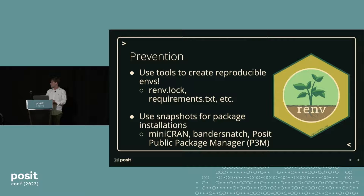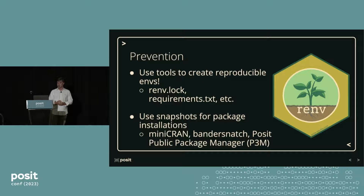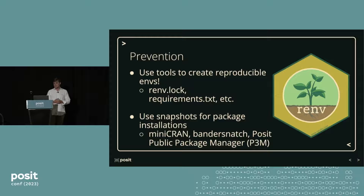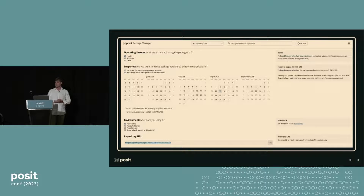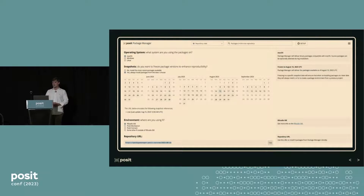We should use tools to create reproducible environments. We have renv.lock, we have requirements.txt in Python, and we should use snapshots for package installation. Minicran is one R package you can use to grab subsets of CRAN. Bandersnatch is one in Python. And as mentioned previously, we also have the Posit public package manager. This is what the view looks like as you're selecting a snapshot you want to always install packages from. This works really well in the R ecosystem because packages on any given date are more likely to be compatible with one another. It also works well in Python because if a package is randomly deleted from PyPI — which happens sometimes when authors get mad — you still get those packages.